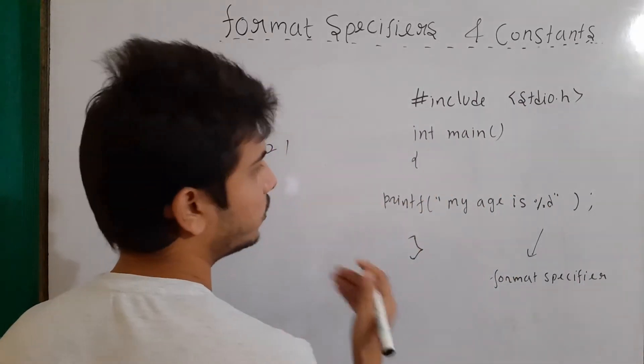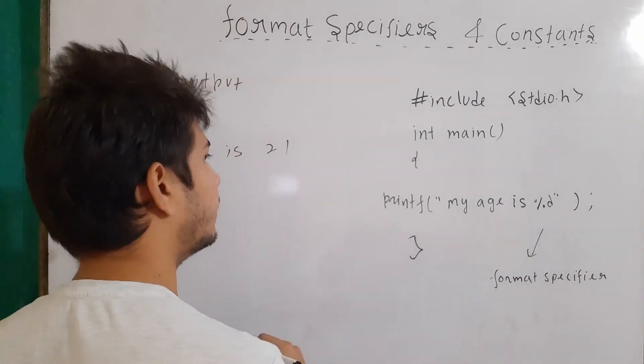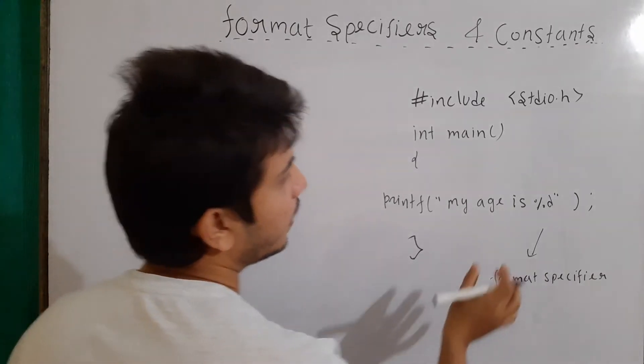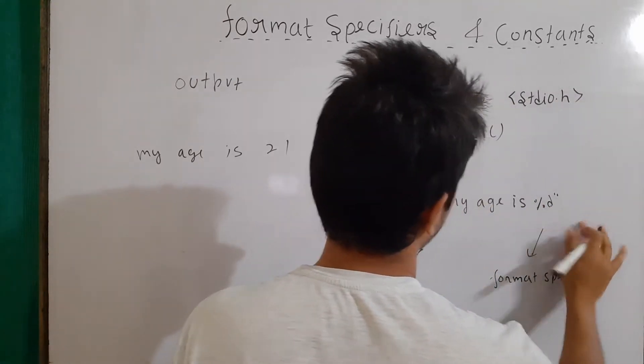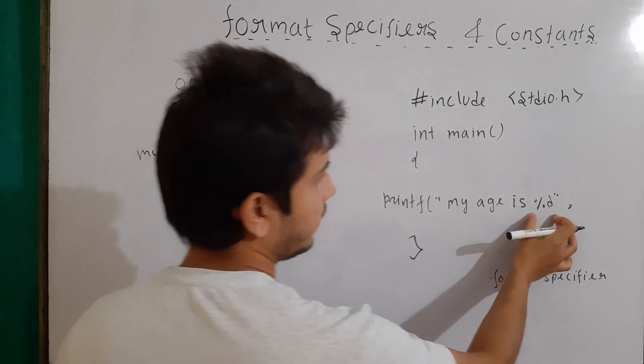Integer means 1, 2, 3, minus 18, minus 220, 0 and so on. So %d for integer. And then I'll write here, comma and whatever value I want to give here. Let's say I want to give here 21.